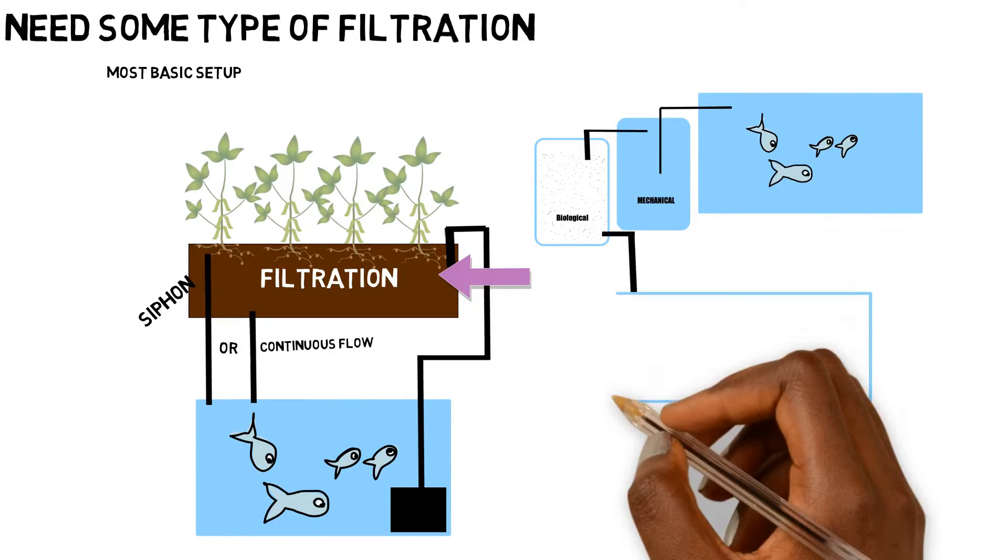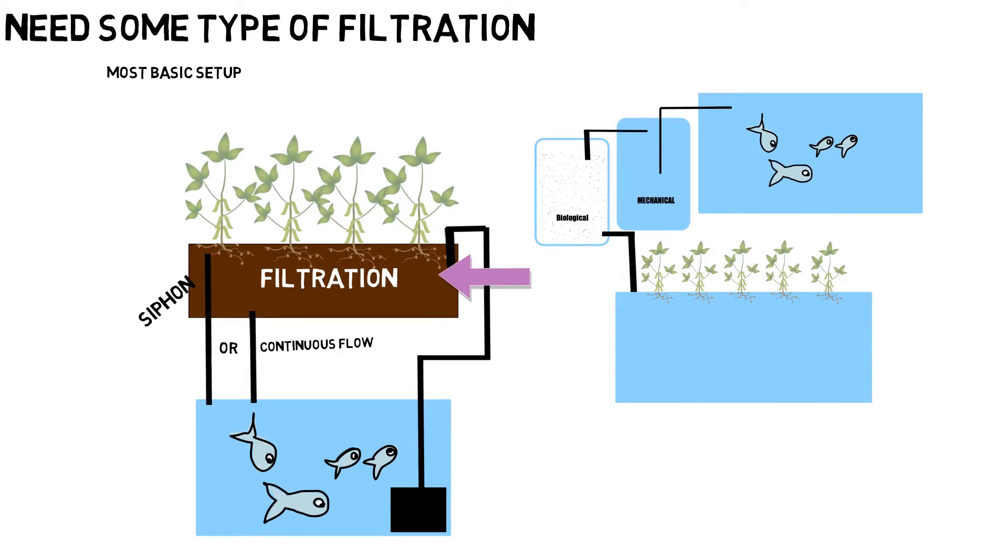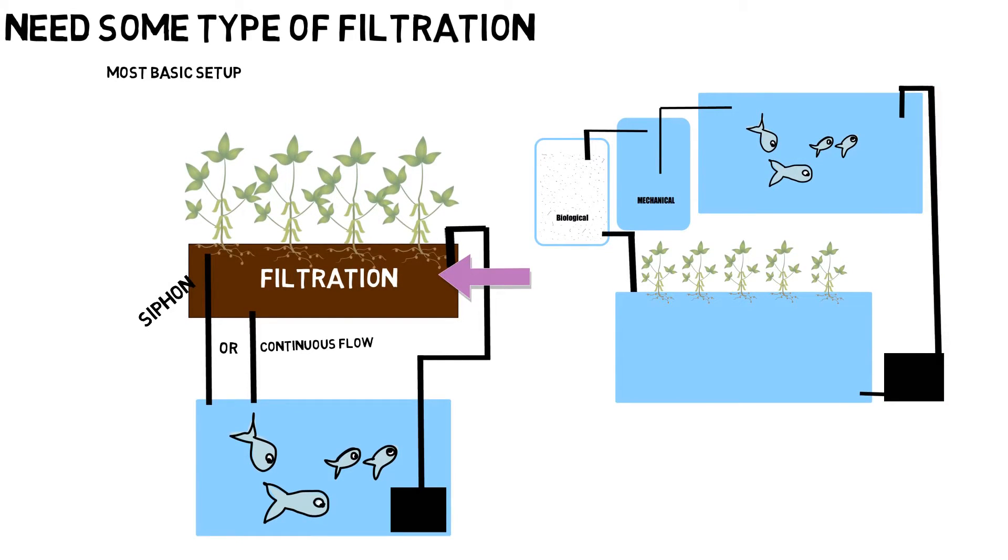And then from there, it can return back into your plant production. And there in your growth system, if this is a deep water culture system, you can either put the pump inside of the deep water culture system, or you can put it outside depending on the type of pump that you use.